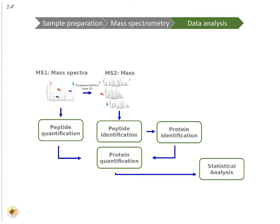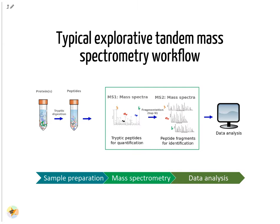The analysis of the acquired mass spectra comprises several steps. First, peptides are identified via the MS2 fragmentation spectra. From these peptide identities the corresponding proteins are assembled. The MS1 spectra are used for peptide quantification. Peptide quantities are summarized into protein quantities. The information about protein identity and quantity allows following statistical analyses. This was the overview of a typical explorative tandem mass spectrometry workflow; now we will dive into more details of the data analysis part.